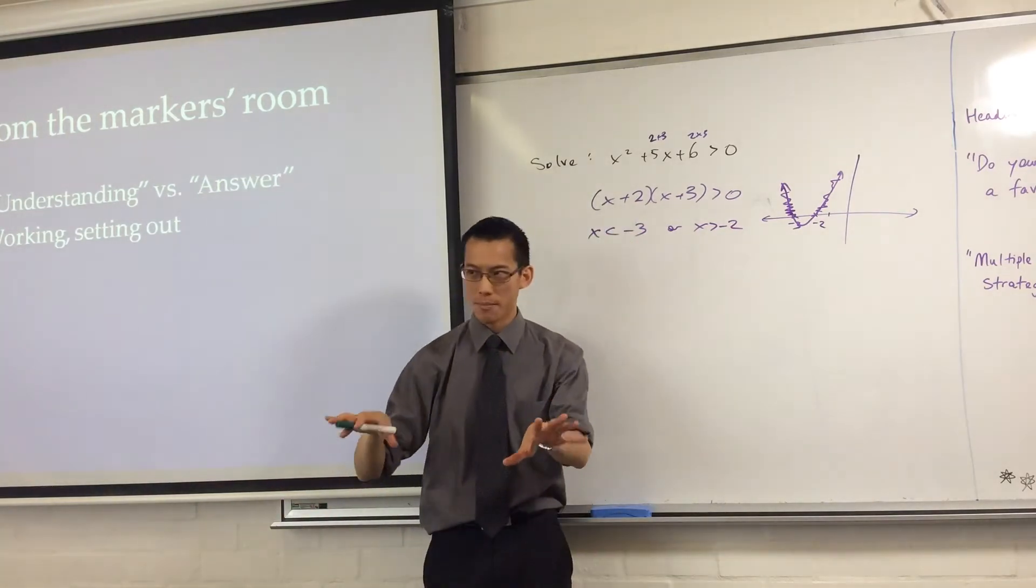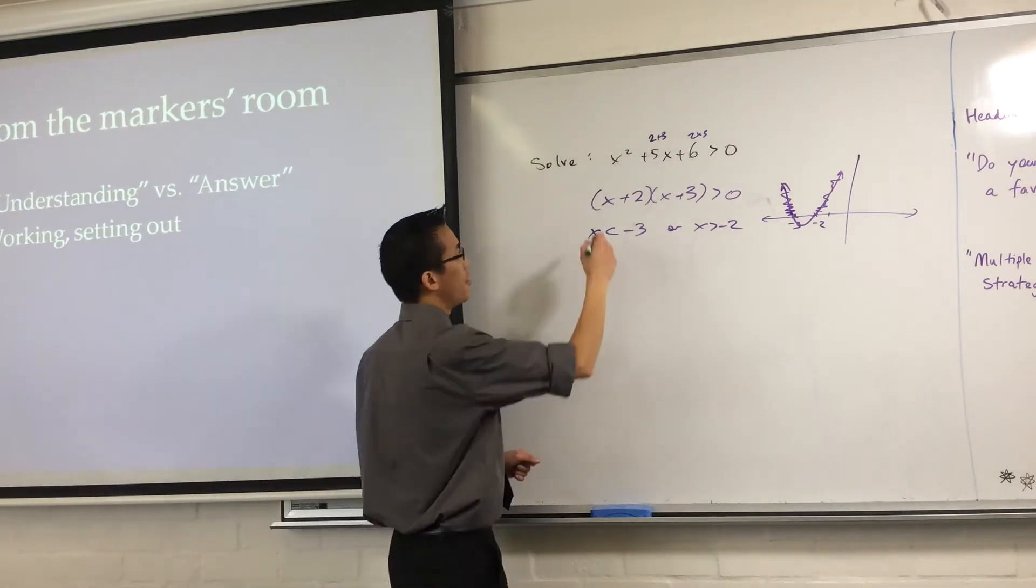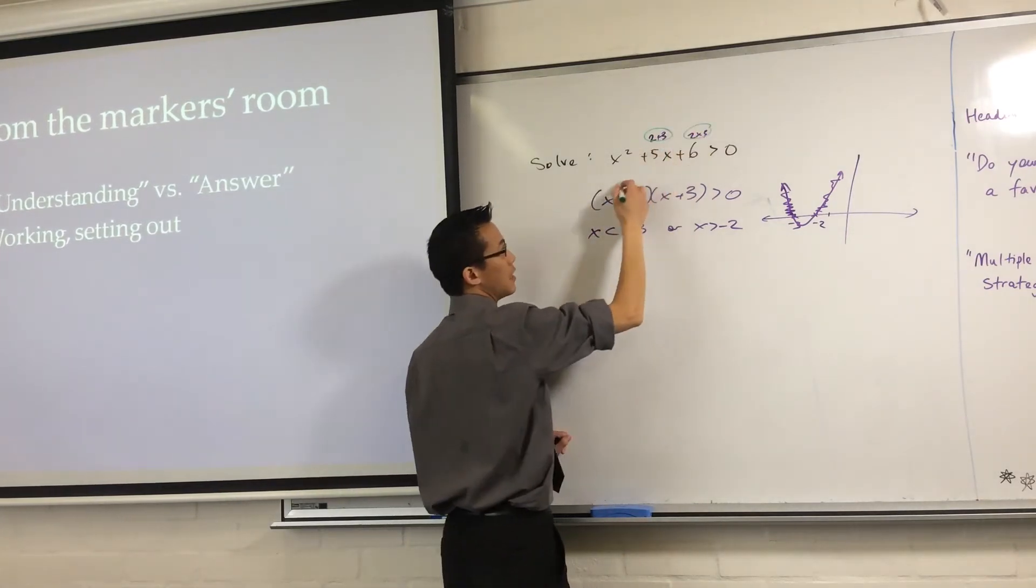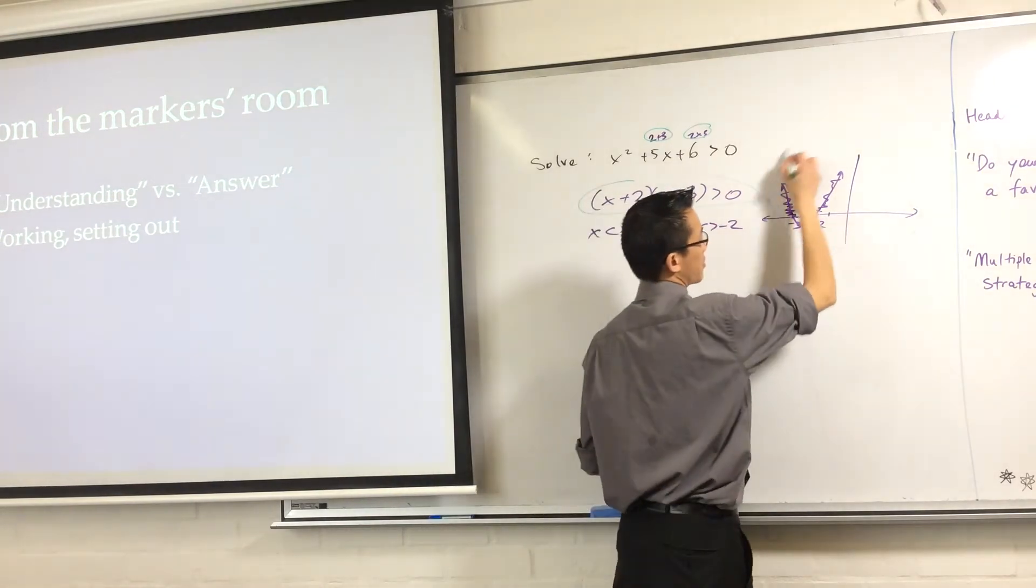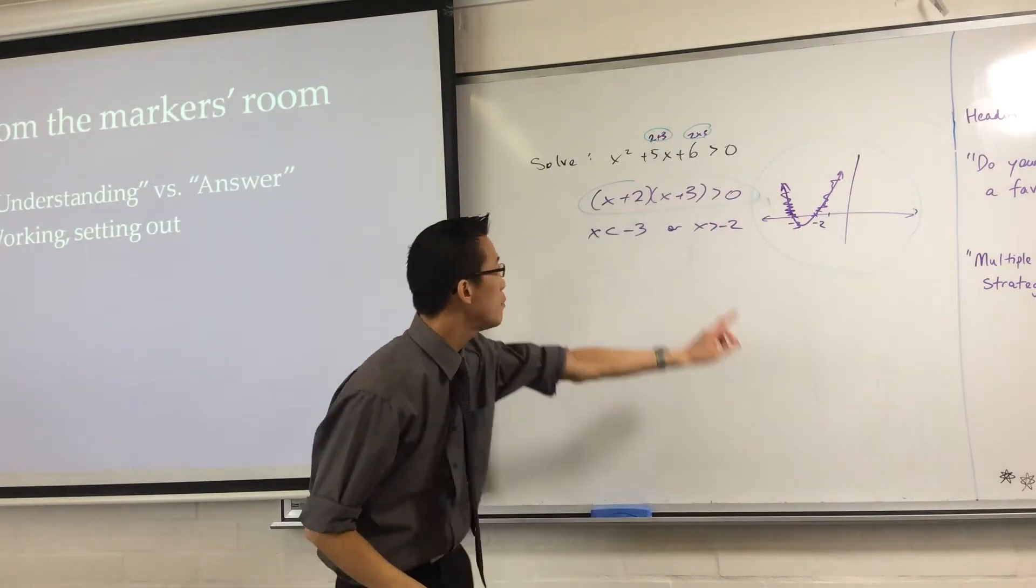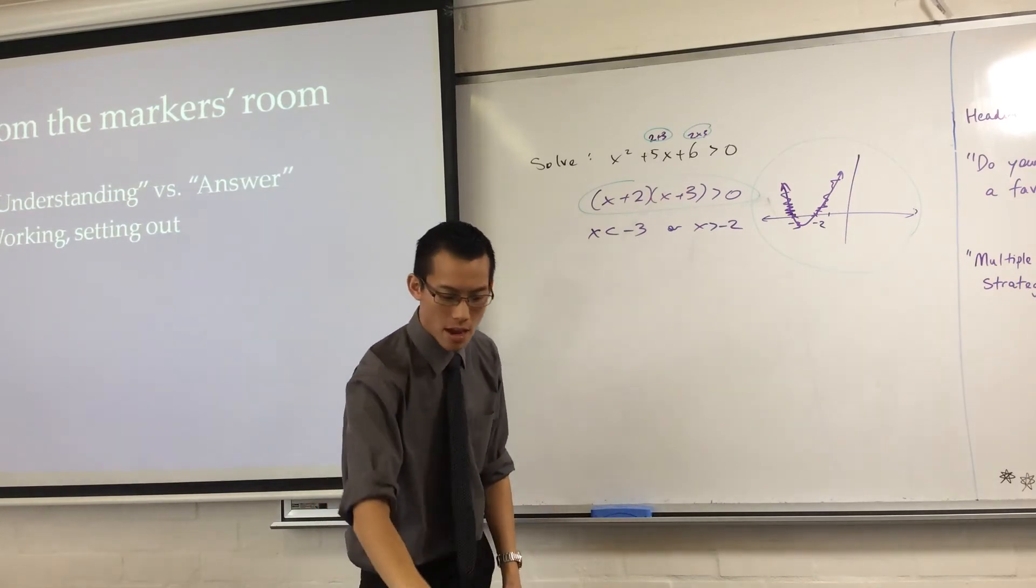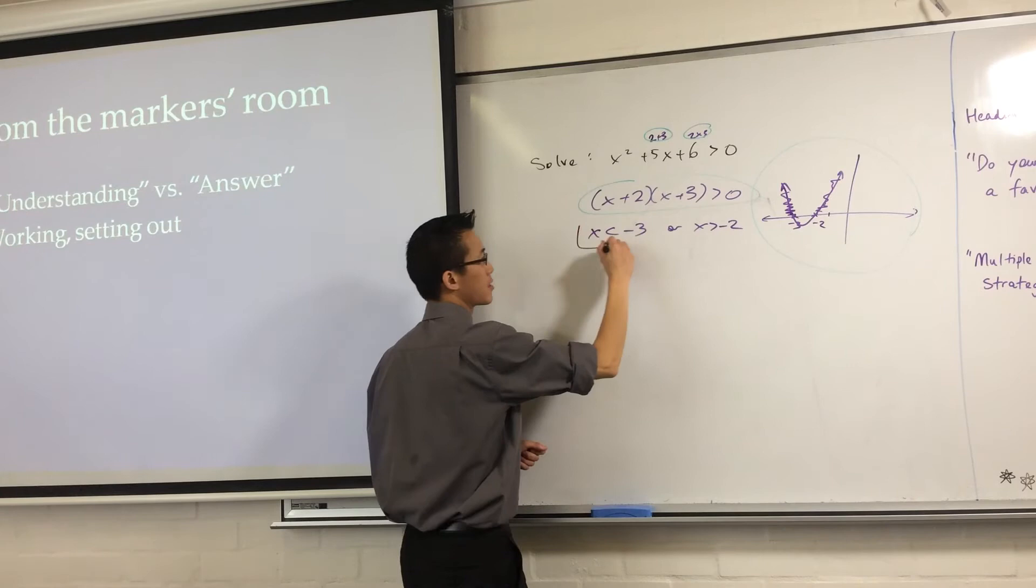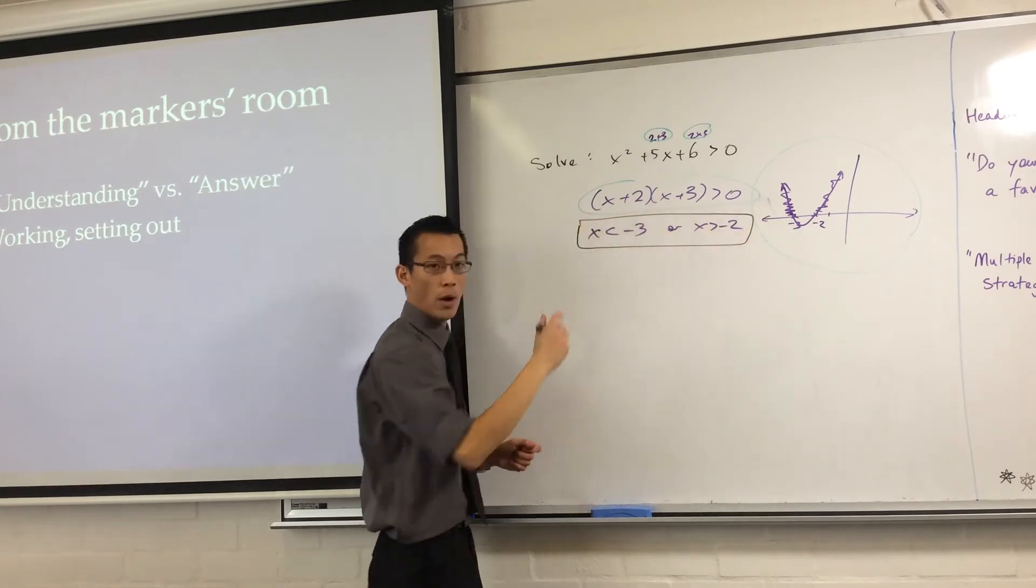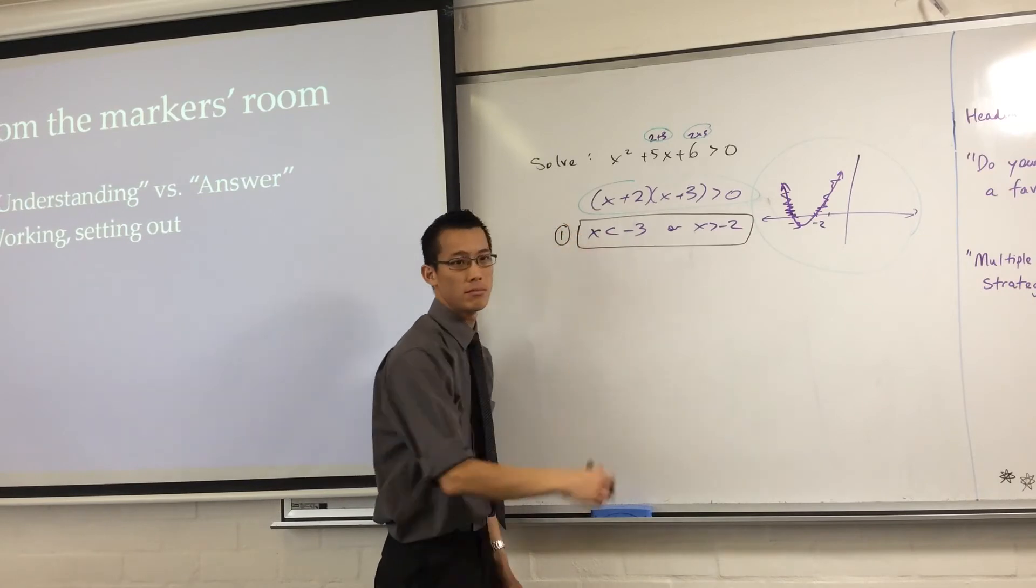Now, whether you understood that or not, here's my point. The working in the setting out, these pieces here, this, this, and this. If I'm an HSC marker, I'm looking for these things. This question, three marks. If all I see is this, which, by the way, is exactly right, out of three, I'll give that one.